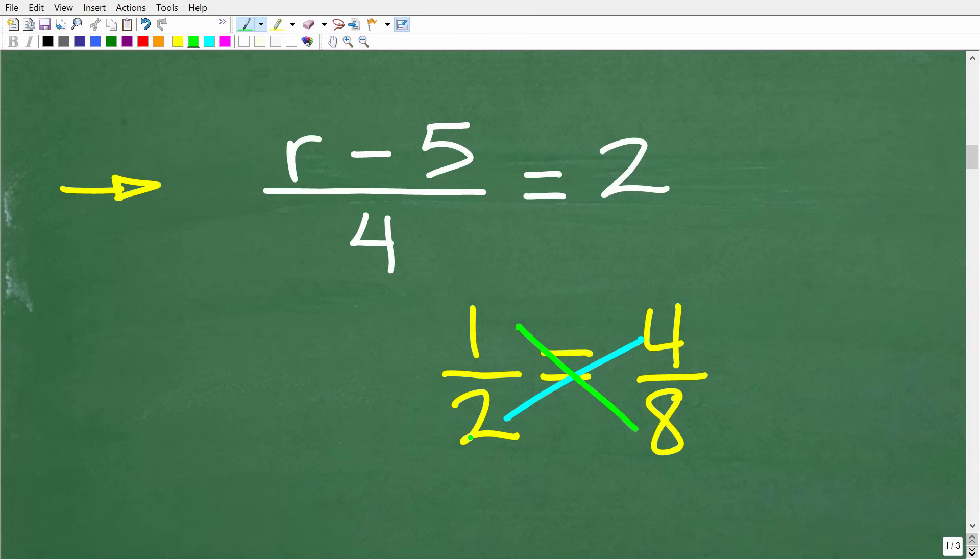So if we cross multiply here, the answers are the same. In other words, the products are equal. So 2 times 4 is what? Well, that is 8. And that is equal to 1 times 8, which is also 8. So again, the cross products are equal anytime you have a proportion. So we can use this concept to solve this equation.